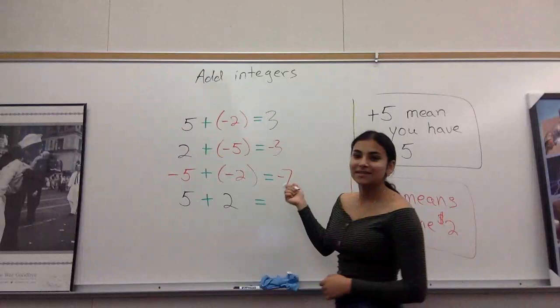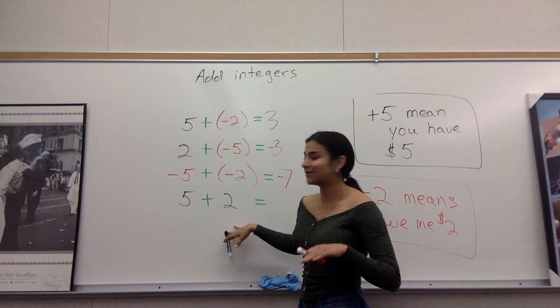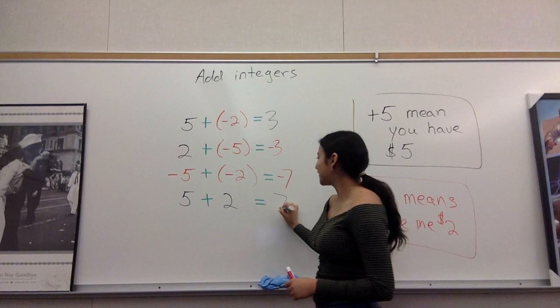Now here, this is a good, happy problem because here you don't owe any money. It's all money for you. You have five dollars, someone gives you two dollars, now you have seven dollars and you don't lose any money. And that's it, simple.